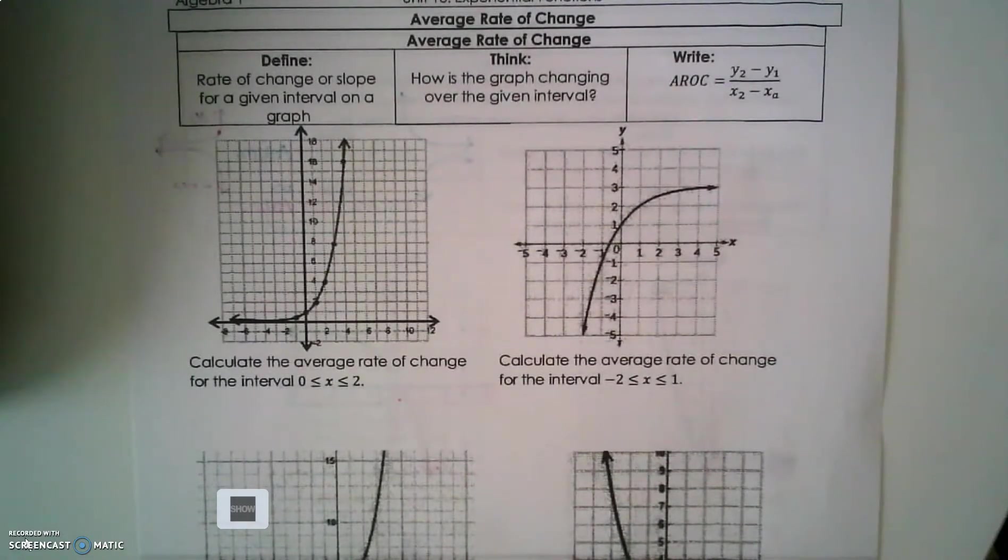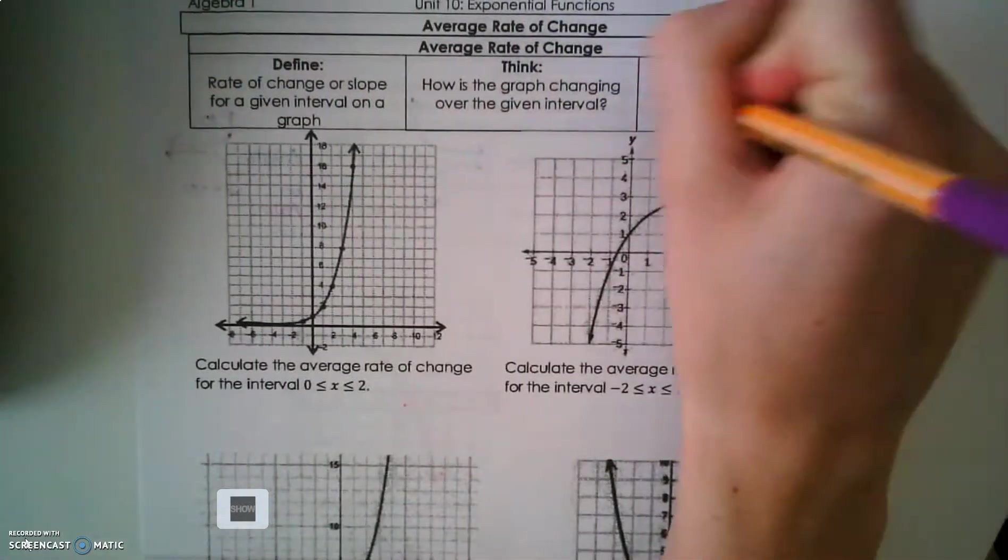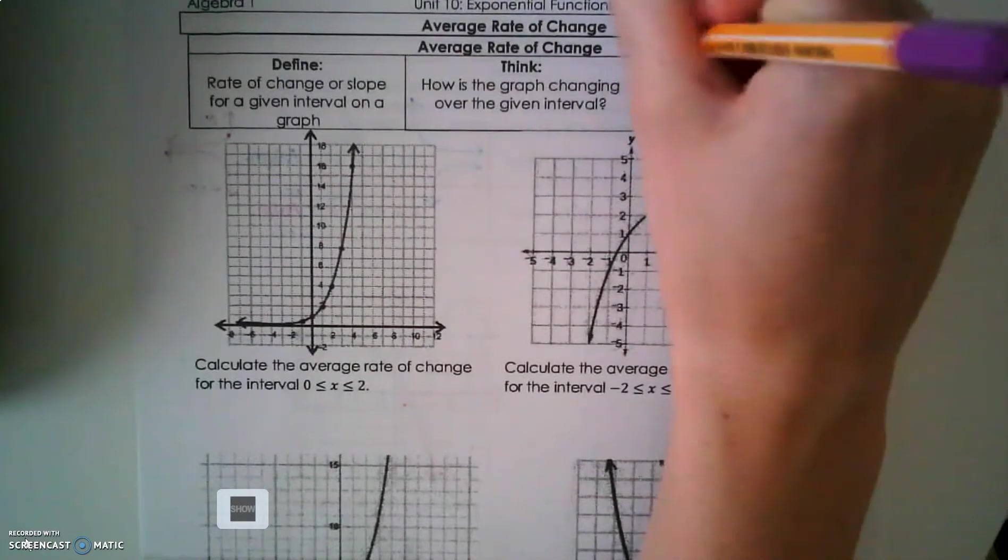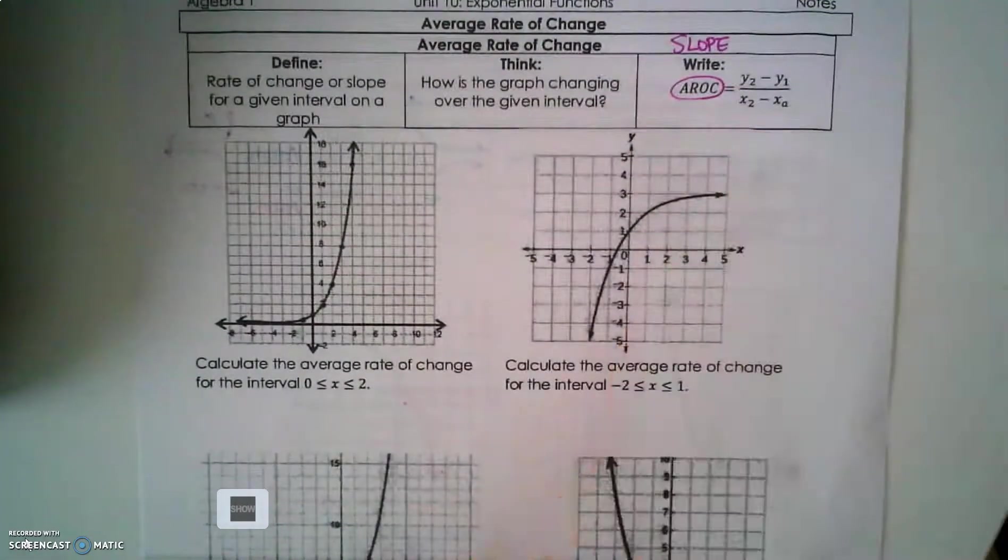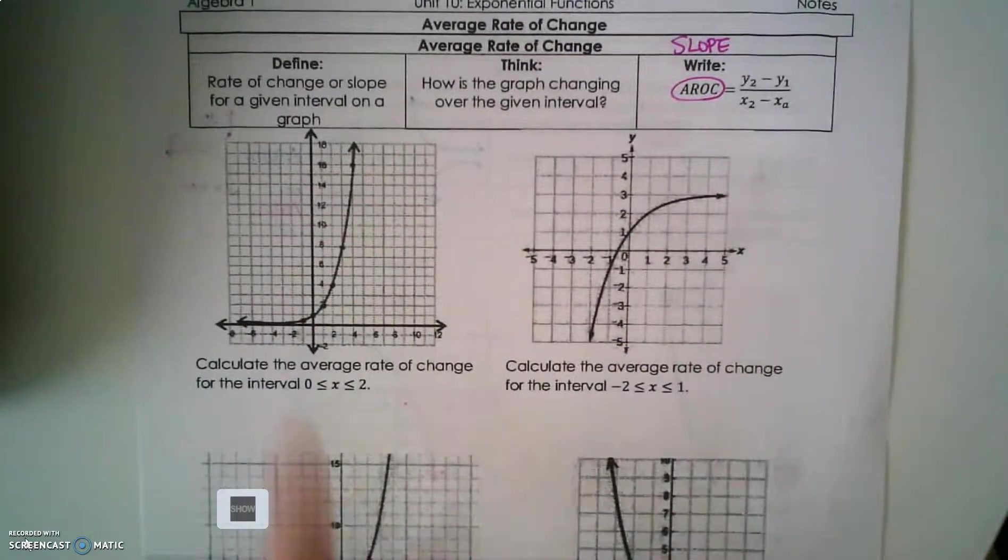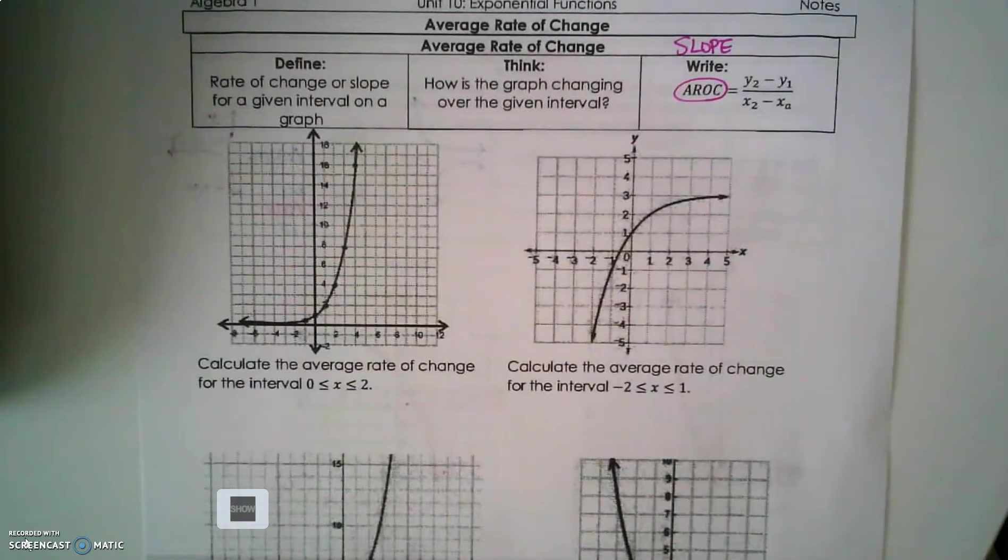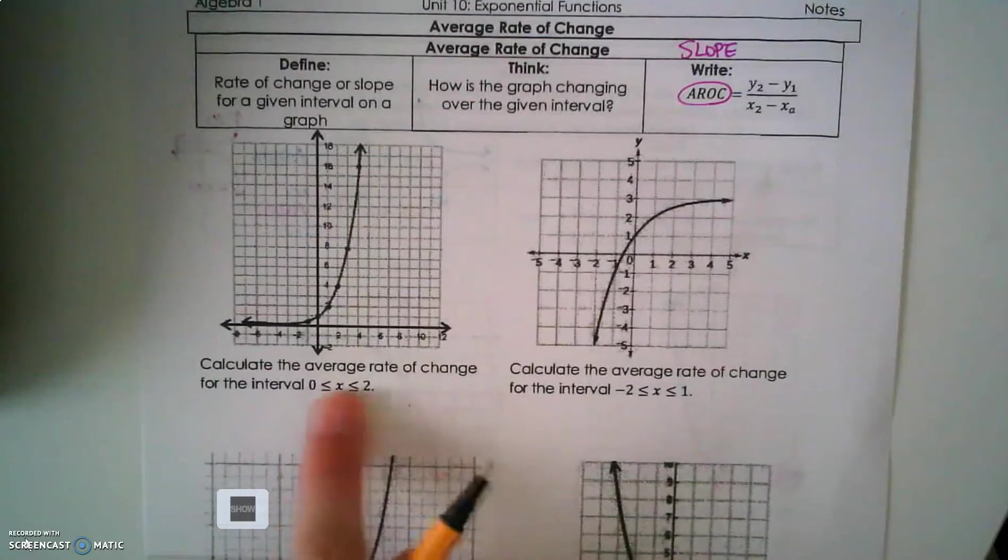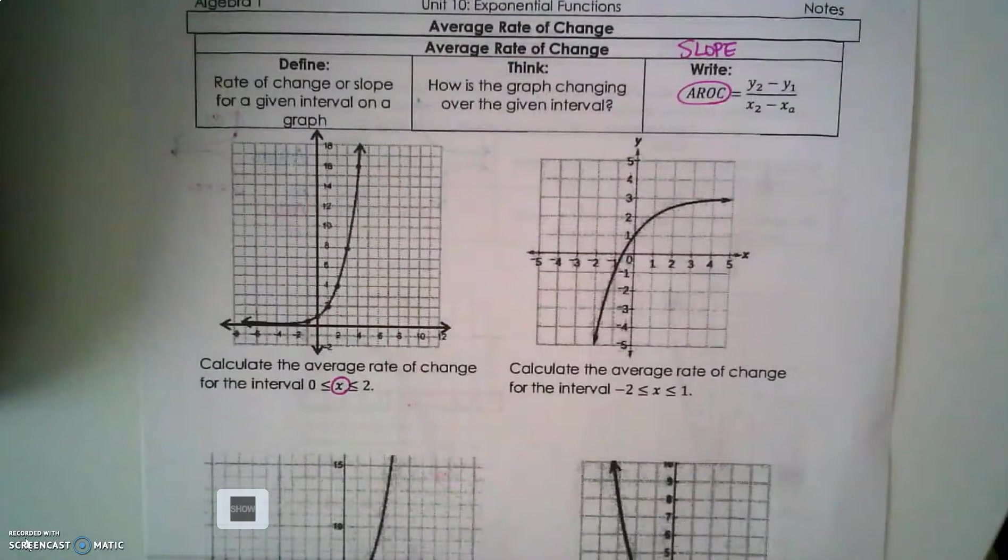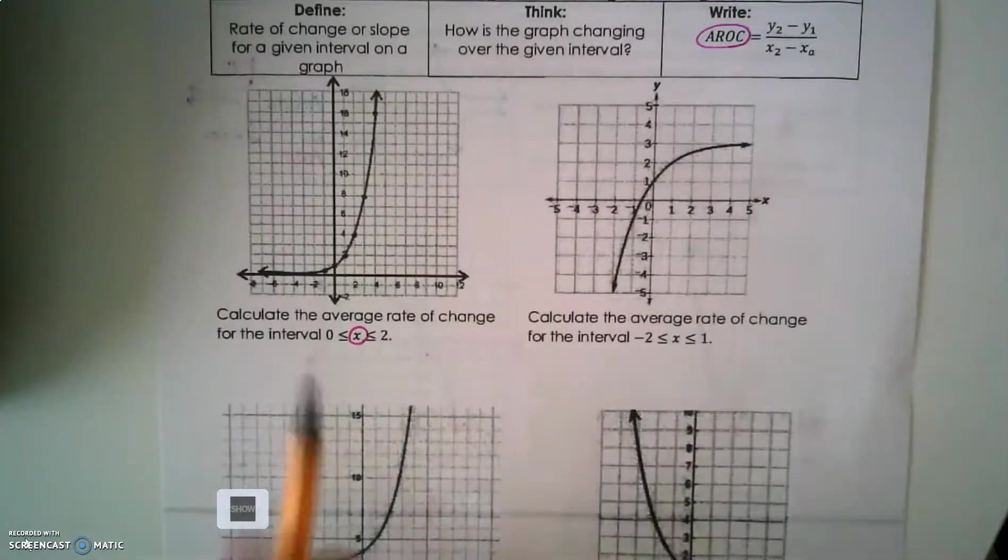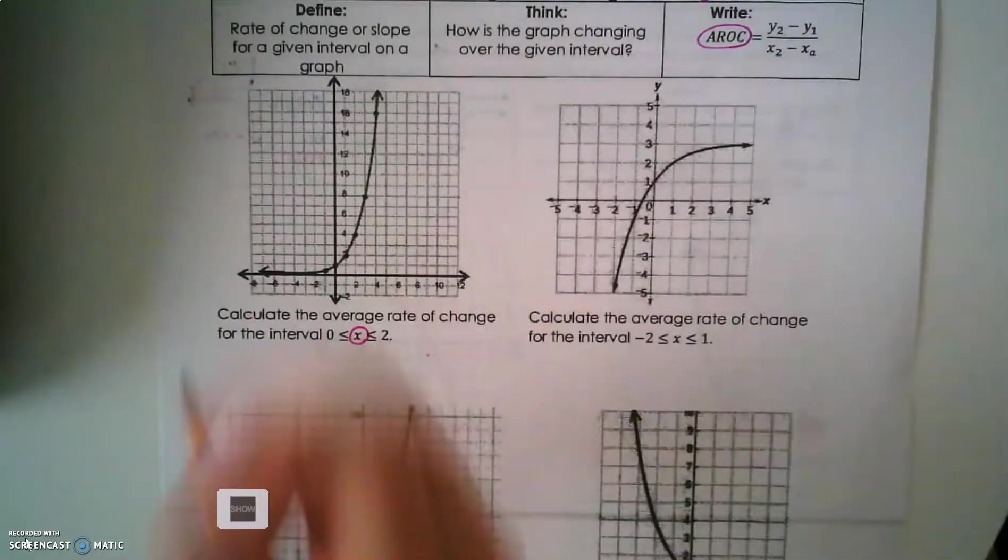What's another name for average rate of change? Remember, another name for average rate of change is slope, and I've given you the slope formula here. If I ask you to calculate the average rate of change and I give you this inequality notation, remember that x value is telling you to find the rate of change between those two x values.